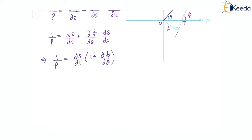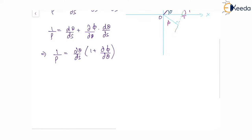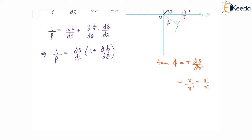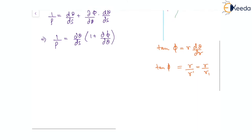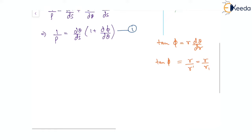We have already learnt that the angle φ made by the radius vector satisfies tan φ = r·(dθ/dr). This can also be written as tan φ = r/r₁, where r₁ stands for dr/dθ.